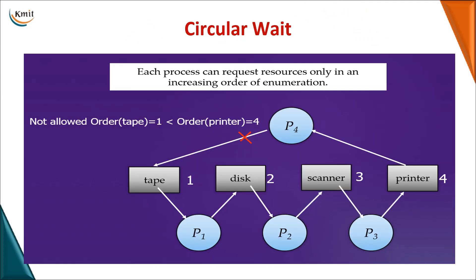The fourth condition is circular wait. In circular wait, P1 waits for R1 which is held by P2; P2 waits for R2 held by P3; P3 waits for R3 held by P1. To eliminate circular wait and prevent deadlock, we need to break this cycle.